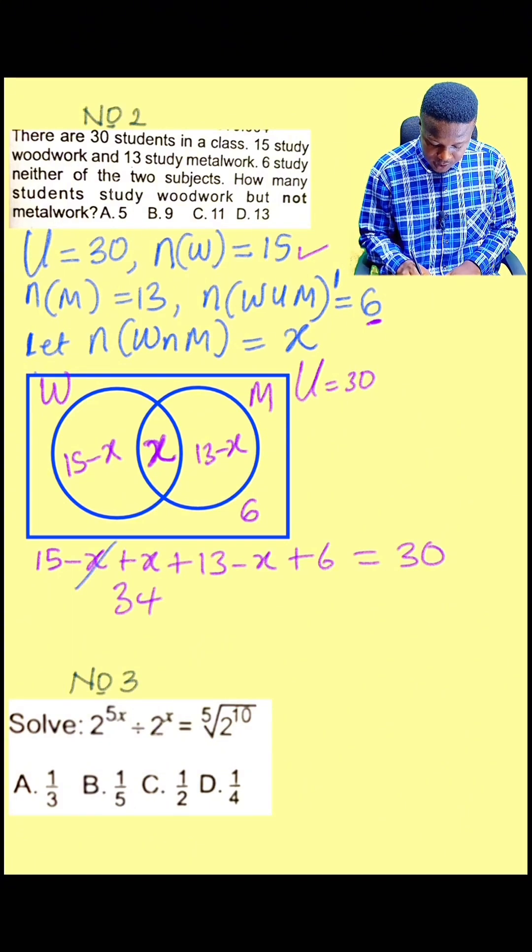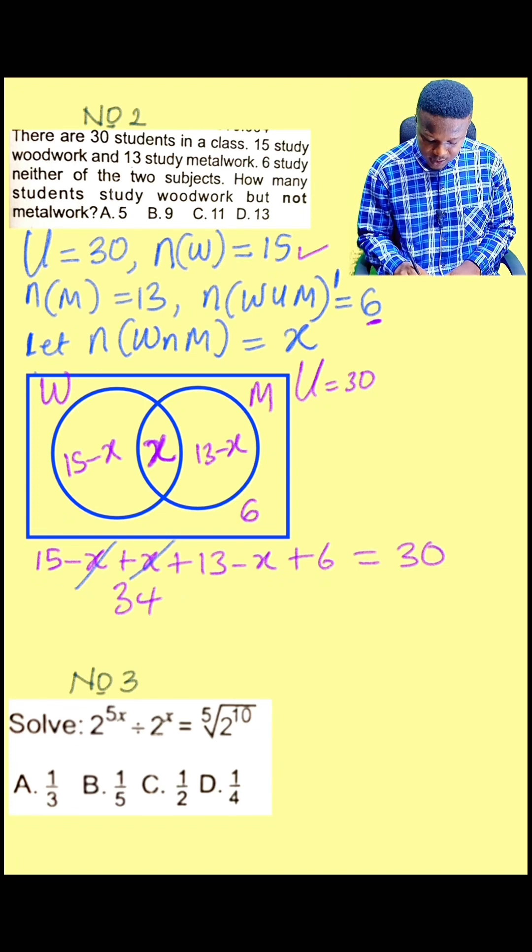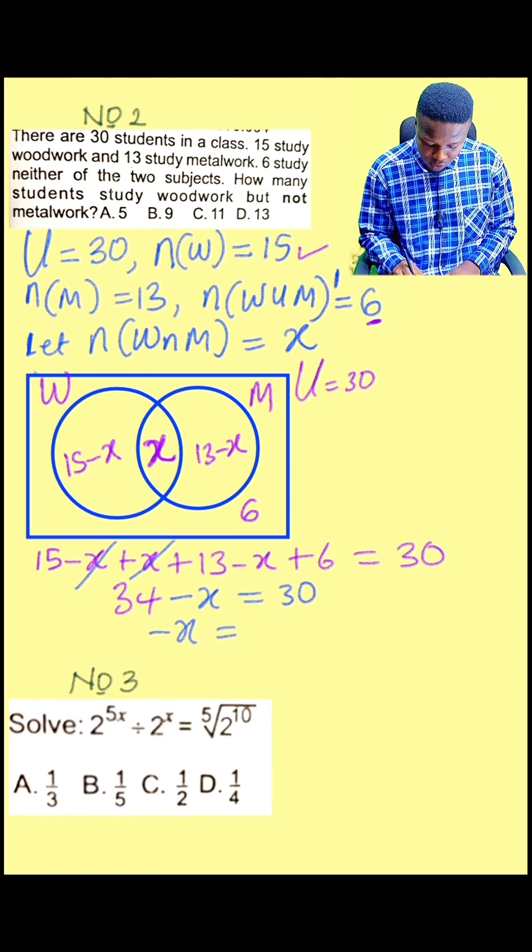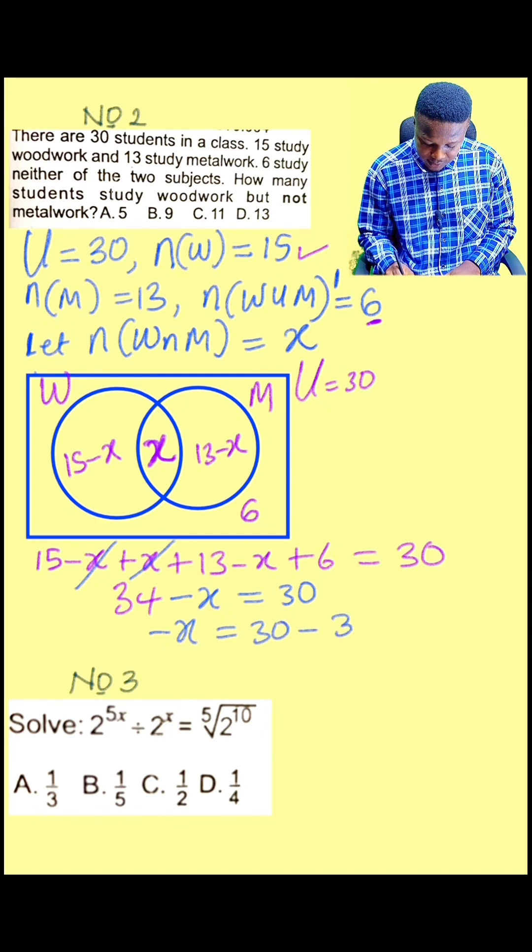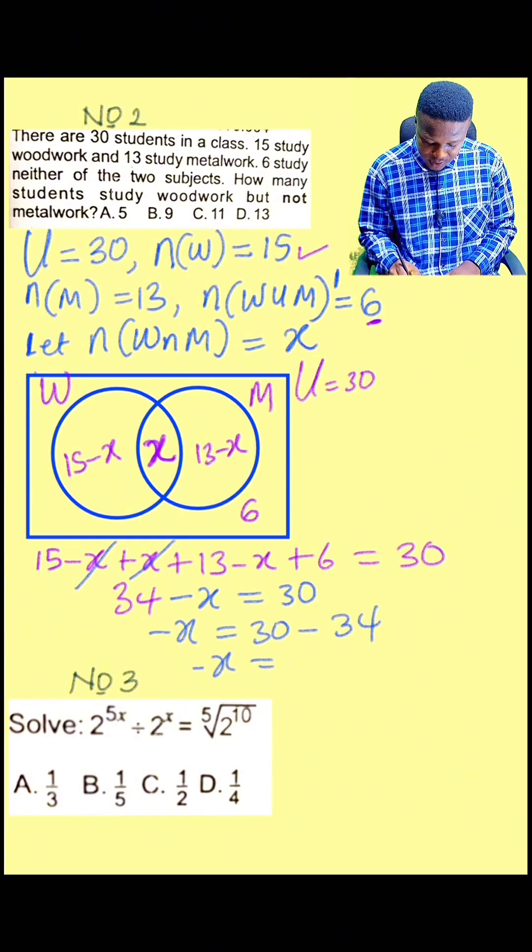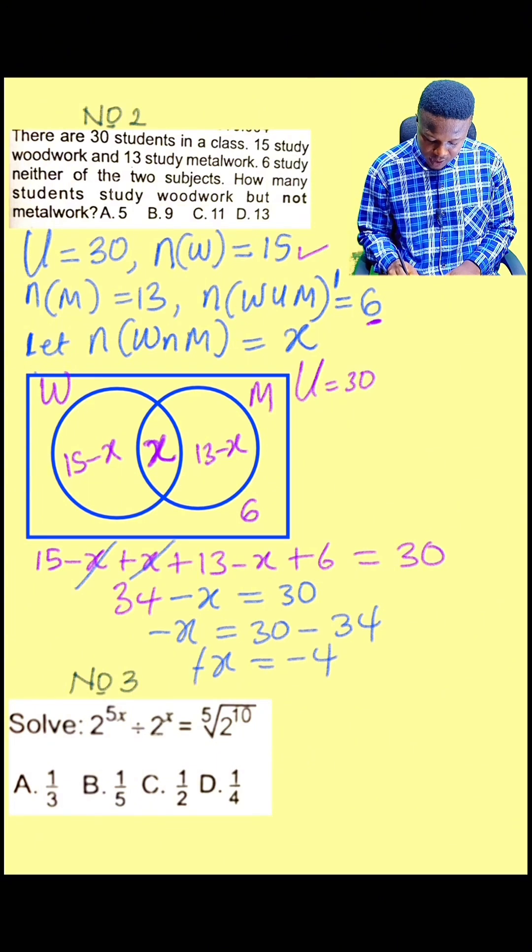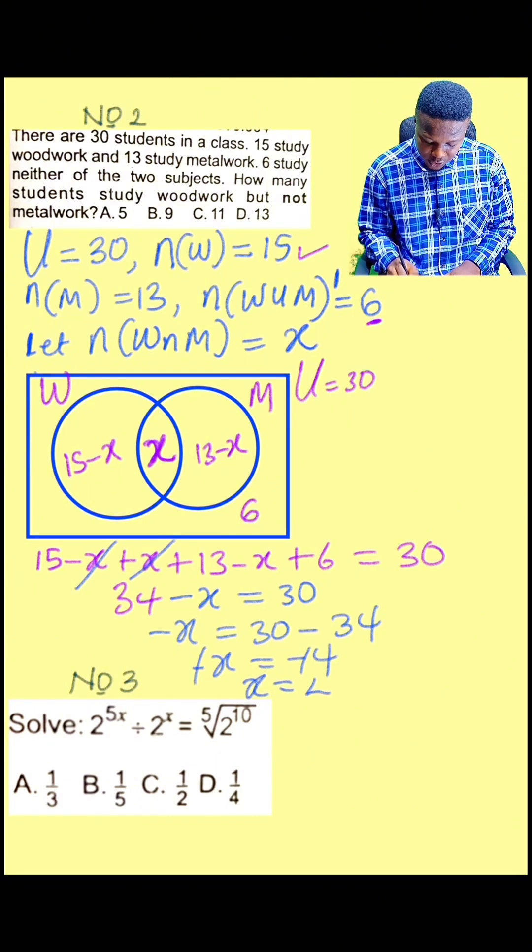Now this X minus X we cancel plus X. We have minus X plus 34 equal to 30. Minus X is equal to 30 minus 34. Minus X is minus 4. Minus we cancel minus. So X is 4.